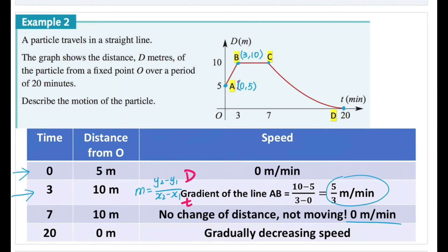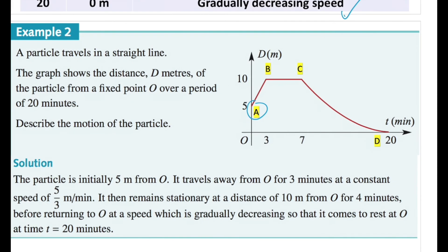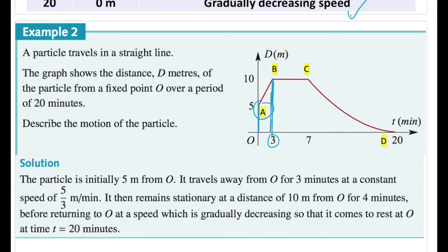For the last segment cd, it is a curve going down, which implies the speed is decreasing. We don't need to find the gradient in this case — we just note the line segment is a curve going down, so the particle is decreasing in speed. The solution confirms: the particle is initially five meters from O, then travels away from O for three minutes at a constant speed of 5/3 meters per minute, referring to segment ab.